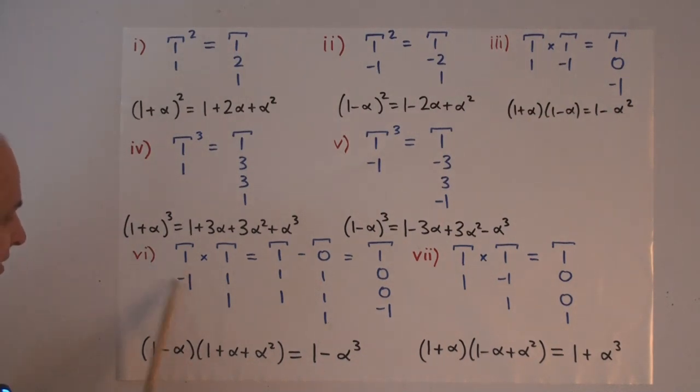Here's a nice, rather important kind of identity that we're going to be using later on quite a lot. 1 minus 1 times 1, 1, 1.